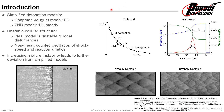We often begin our analysis of detonations by considering simplified models, the first of which is the Chapman-Jouguet model. This model is zero-dimensional and does not take into account the chemical kinetics. However, by only considering the initial state conservation laws and the thermodynamic properties, it is able to accurately predict the wave speed at state two.